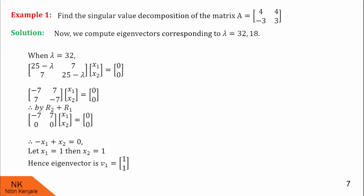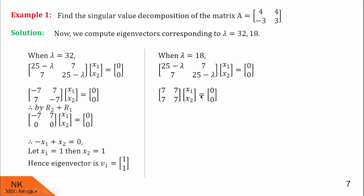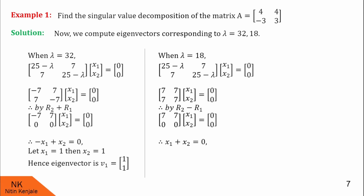Now we find the eigenvector corresponding to lambda equals 18. We solve A transpose A minus lambda I into x equals 0 with lambda equals 18. Using transformation R2 minus R1, we get the equation 7x1 plus 7x2 equals 0, or x1 plus x2 equals 0. Assigning x1 equals 1, we get x2 equals minus 1. Therefore the corresponding eigenvector is (1, -1). We label these as V1 and V2 respectively.